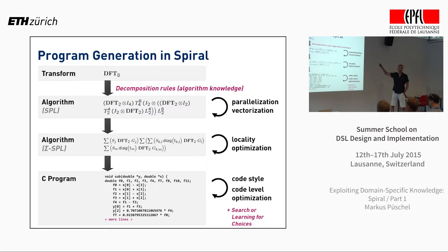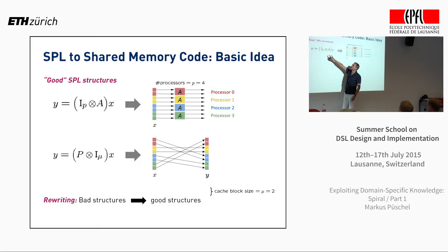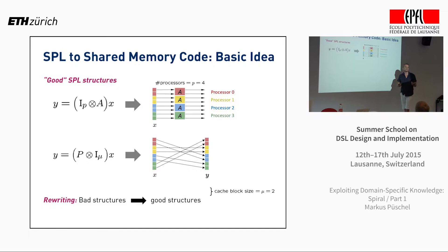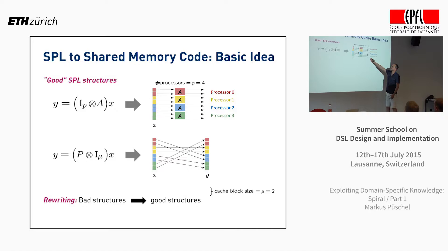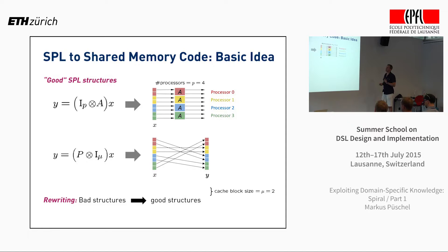We want to take these mathematical expressions and turn them into parallel code. There is a nice connection to exploit. The most obvious one: if you have a construct like Iₚ ⊗ A, it is naturally and embarrassingly parallel. There's absolutely no problem parallelizing this. For example, if you have four processors and P is four, you have four perfectly load-balanced parallel computations. You can just generate parallel code using threading or OpenMP and get a perfect speedup.